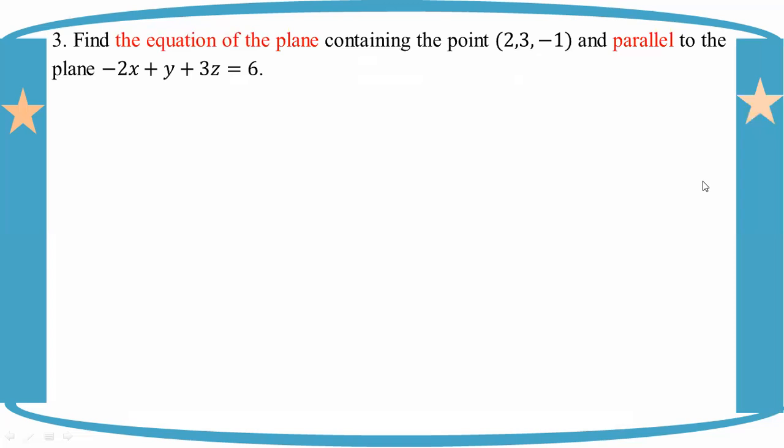Number three: Find the equation of the plane containing the point (2, 3, -1) and parallel to the plane -2x + y + 3z = 6.